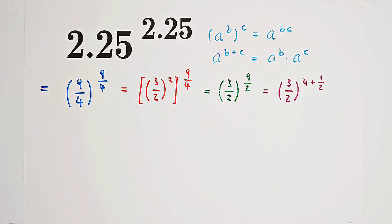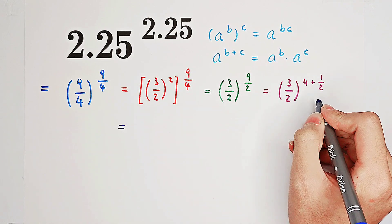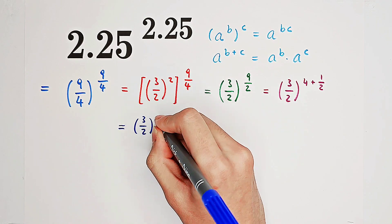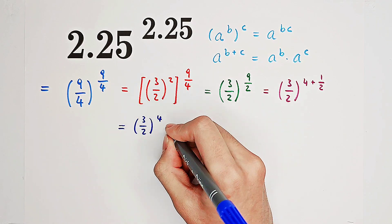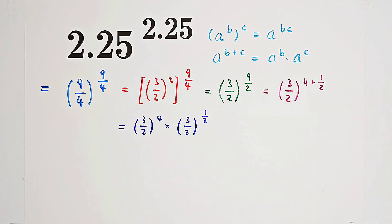A to the power of b plus c equals a to the power of b times a to the power of c. So, it implies that we can write this one just as a product of 3 over 2 to the power of 4 and 3 over 2 to the power of 1 half.